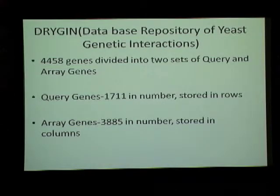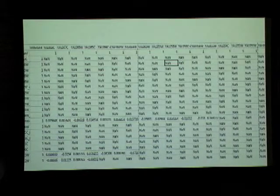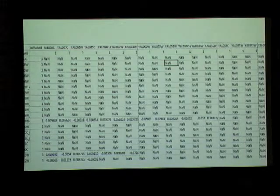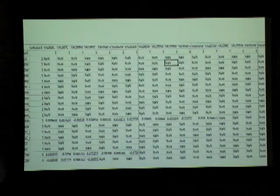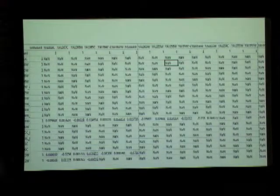The database on which the current experiments were done is an online gene database called dryGene. 4,458 genes were taken and split into two sets: one called the query set and one the array set. The query set had 1,711 genes and the array set had 3 different genes. The query set was stored as rows and the array set as columns. These are the interaction values between a query gene and an array gene, so each row will be a query gene's interaction profile and each column will be an array gene's interaction profile. NaN means not a number — there is no interaction between that query gene and array gene.